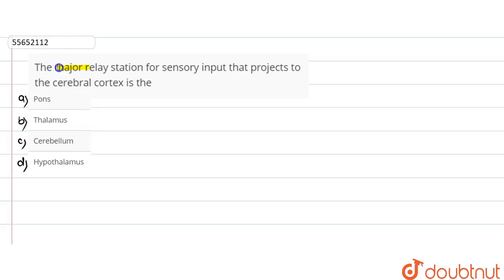In this question, there is a major relay station for sensory input that projects to the cerebral cortex. So here it is said, what is the relay center in the brain? What is a relay center?